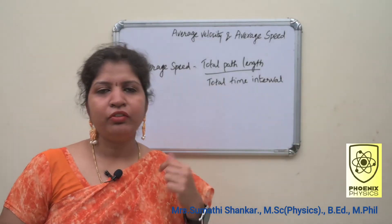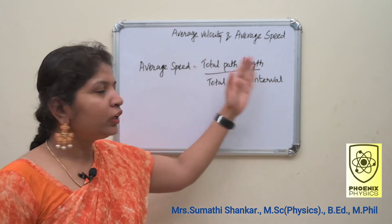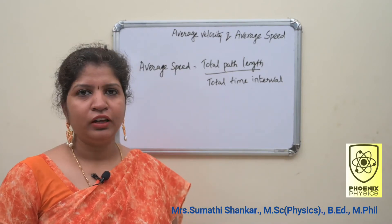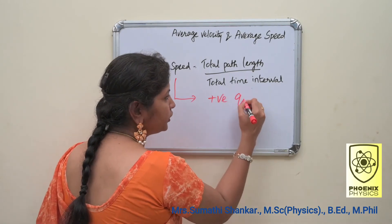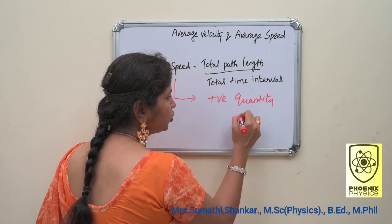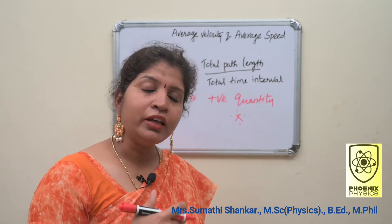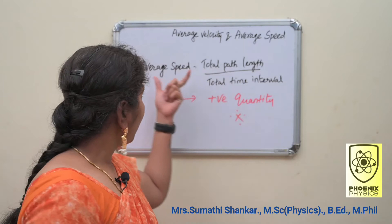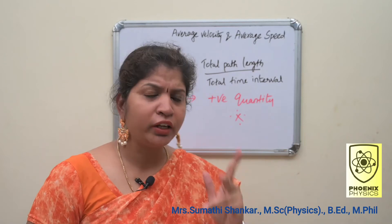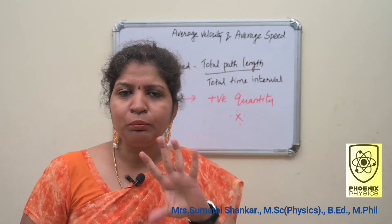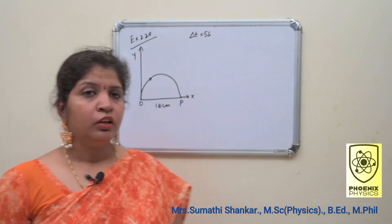How do you calculate average speed? Average speed is defined as the ratio of total path length to the total time interval. Average speed is always a positive quantity. This is very important. Average velocity can have either a positive or negative value, but average speed has only a positive value. Why? Because speed has only magnitude, so speed has only a positive value.